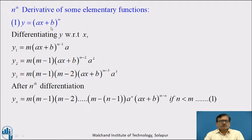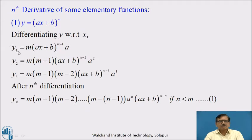Differentiating y = (ax + b)^m with respect to x, we get y₁ = m(ax + b)^(m−1) · a. Similarly, differentiating this first derivative with respect to x, we get the second derivative y₂ = m(m−1)(ax + b)^(m−2) · a².